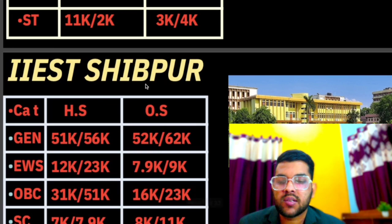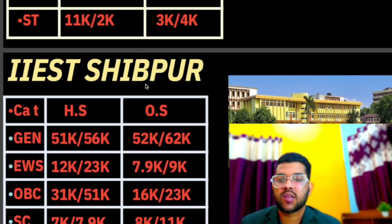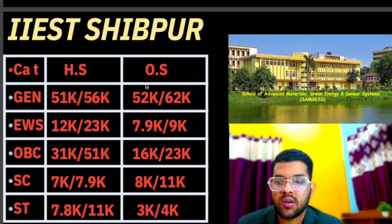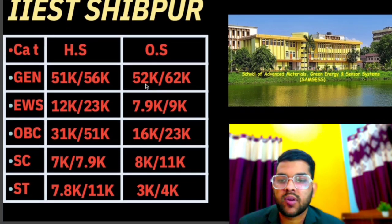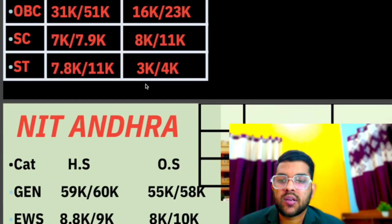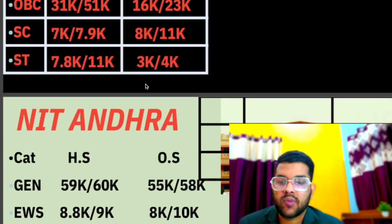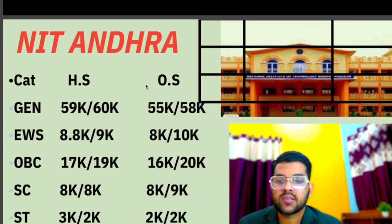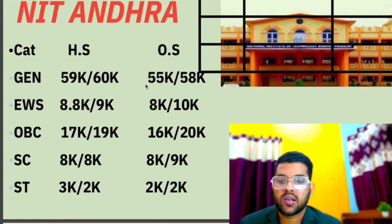For IIESt Shibpur: general 52,000, EWS 7,900, OBC 16,000, SC 8,000, ST 3,000 for other state male — other data you can check sideways. For NIT Andhra: general 55,000, EWS 8,000, OBC 16,000, SC 8,000, ST 2,000.